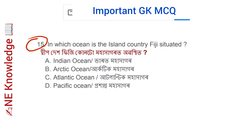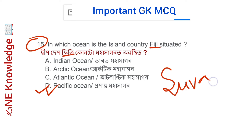Question number 15: In which ocean is the island country Fiji situated? Options: Indian Ocean, Arctic Ocean, Atlantic Ocean, Pacific Ocean. Correct answer: Option D — Pacific Ocean. Fiji's capital is Suva and its currency is the Fijian Dollar.